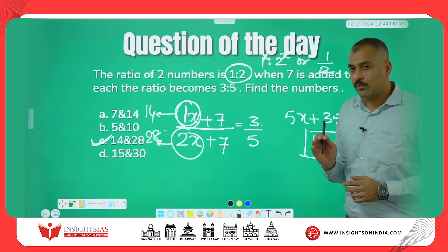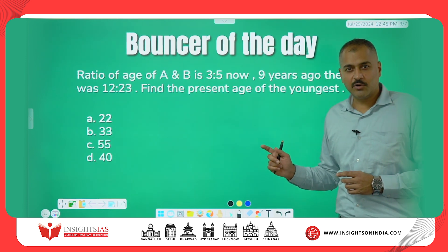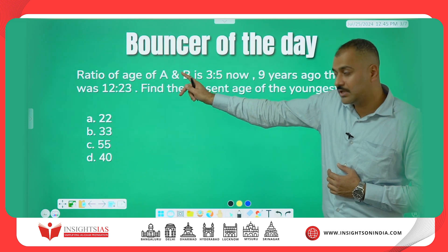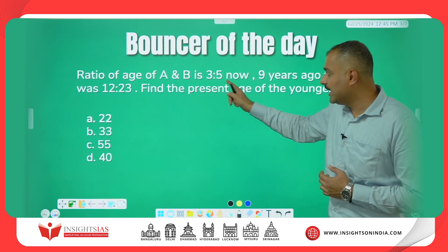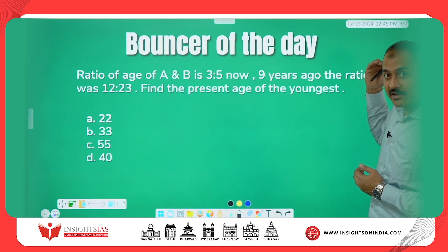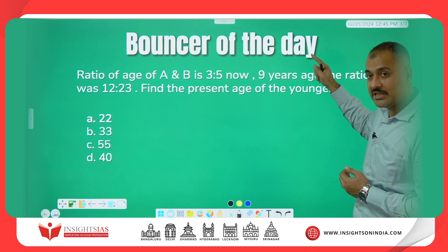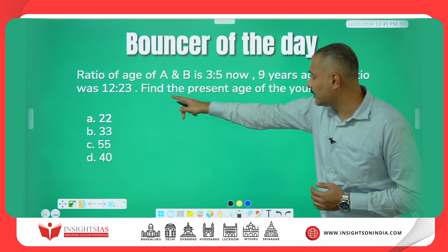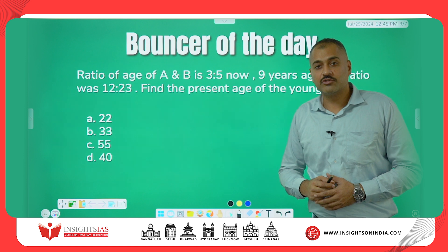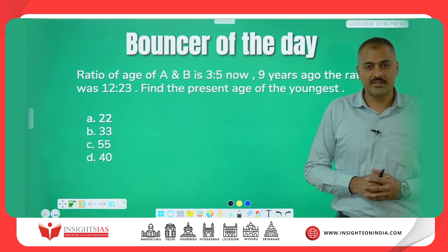A very similar question as homework — the bouncer. This is very similar to what I have done today. The ratio of ages of A and B is 3 is to 5. Nine years ago — meaning you subtract 9 — so we take 3x minus 9 and 5x minus 9. Then the ratio becomes 12 is to 23. Find the present age of the youngest. I want you to solve this and put the answer in the comments. Thank you and see you in the next video.